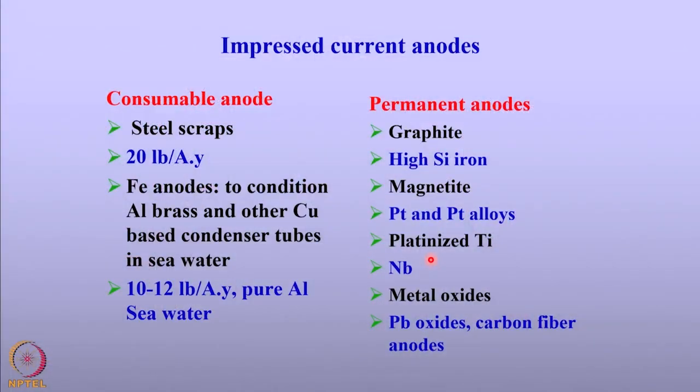Impressed current anodes are of two types: consumable and permanent. Consumable anodes are generally steel scraps and are inexpensive. However, dissolution of the steel is not the main function; a rectifier still provides the current. The dissolution of these consumable anodes is unintended and occurs due to the higher voltage applied. These anodes are generally used in pure water and seawater conditions.